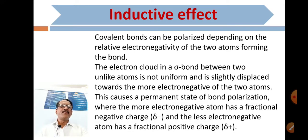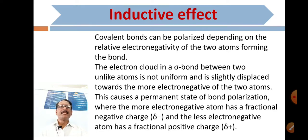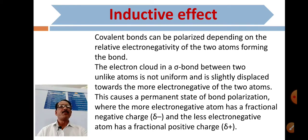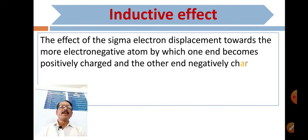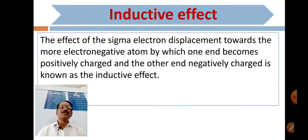This causes a permanent state of bond polarization where the more electronegative atom has a fractional negative charge (delta minus) and the less electronegative atom has a fractional positive charge (delta plus). The effect of sigma electron displacement towards the more electronegative atom, by which one end becomes positively charged and the other negatively charged, is known as the inductive effect.